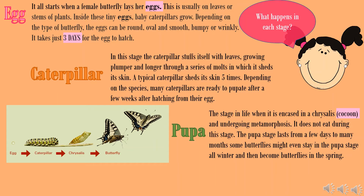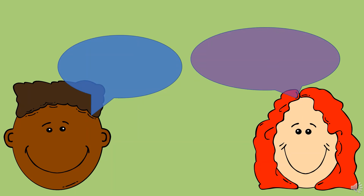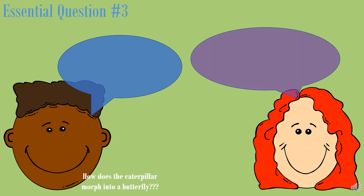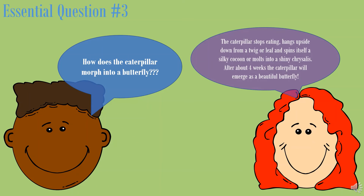Finally, it's the butterfly stage. Adult butterflies during this stage will mate, the female will lay her eggs, and the life cycle will start over. The caterpillar stops eating, hangs upside down from a twig or leaf, and spins itself into a silky cocoon or molds into a shiny chrysalis. After about four weeks, the caterpillar will emerge as a beautiful butterfly.